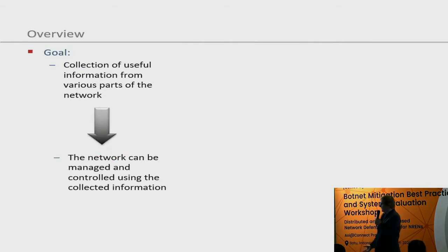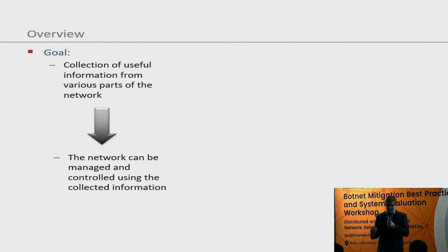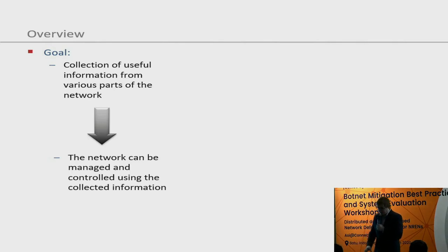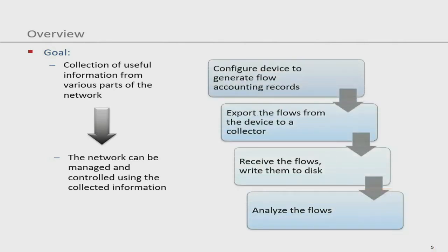The goal is to collect useful information from all parts of the network — all servers, all client machines, everything that is running — and manage the network based on that data. Usually there are four steps: first, configure devices to generate flow accounting records, so-called flow records that show data about network streams. Then export all data from different devices to a centralized collector. Then save the data and analyze the flows.